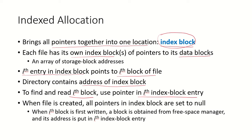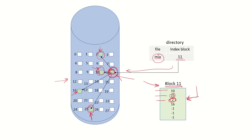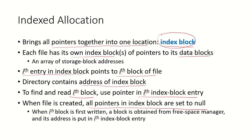When a file is created, all the pointers in the index block are set to null. Suppose a new file foo is being created and an index block, say block 90, has been allocated to it. All entries in block 90 will be null because right now there are no data blocks assigned to this file. When the ith block is first written, a block is obtained from the free space manager and its address is put in that ith index block entry.